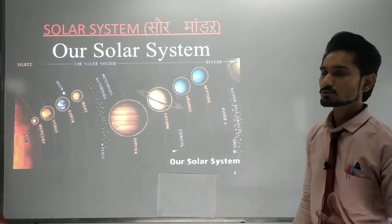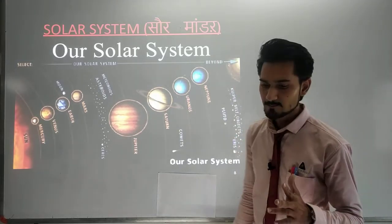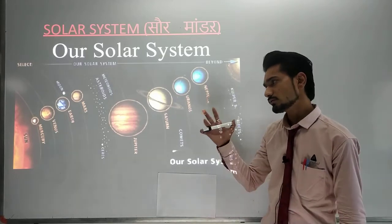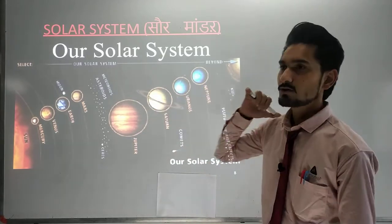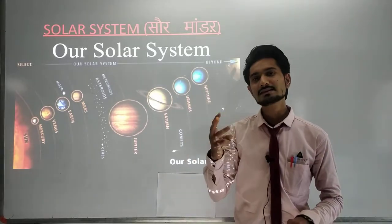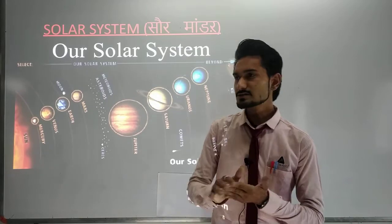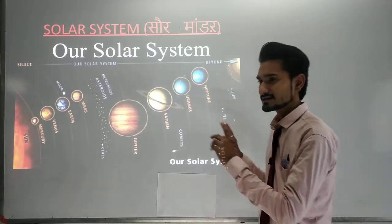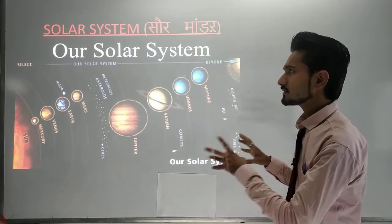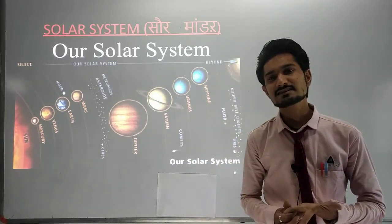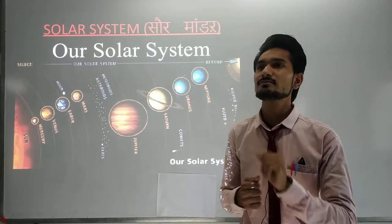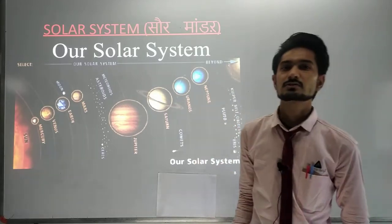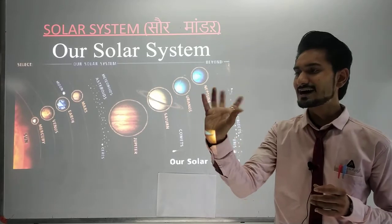Now our last topic for today's lecture — we are going to learn how to memorize the planet names. We will do the planet names in three groups of three. There are two types of phenomena that occur in our solar system: the first is rotation and the second is revolution.